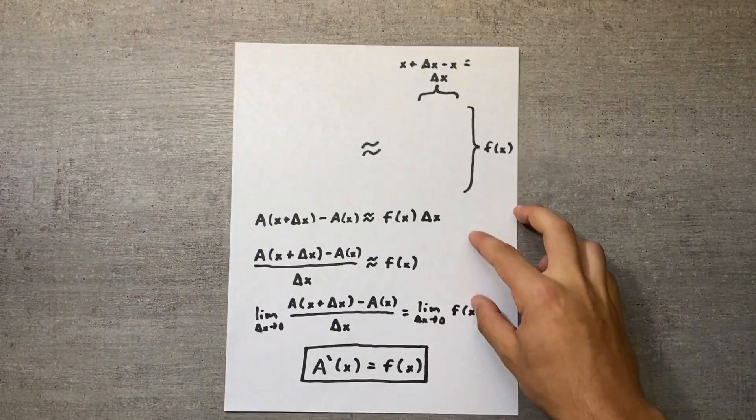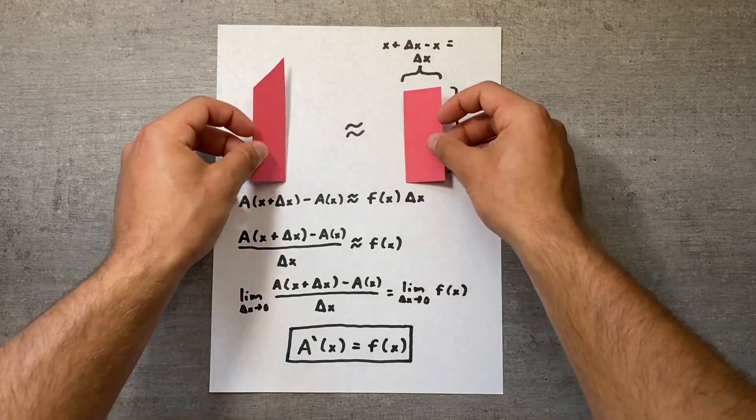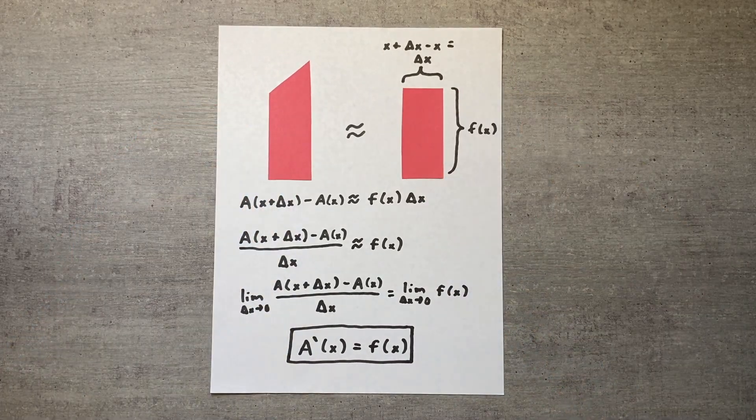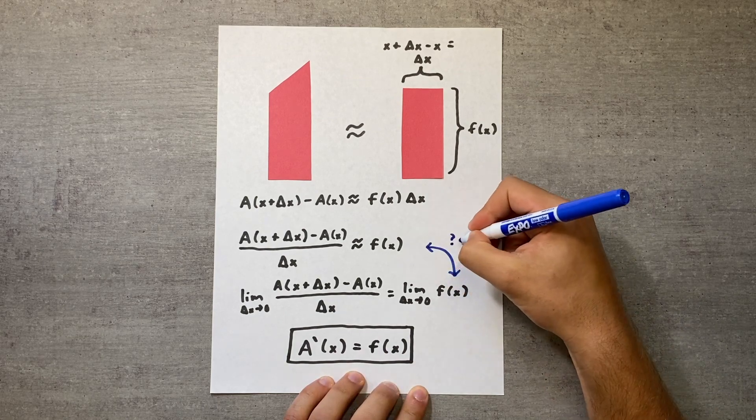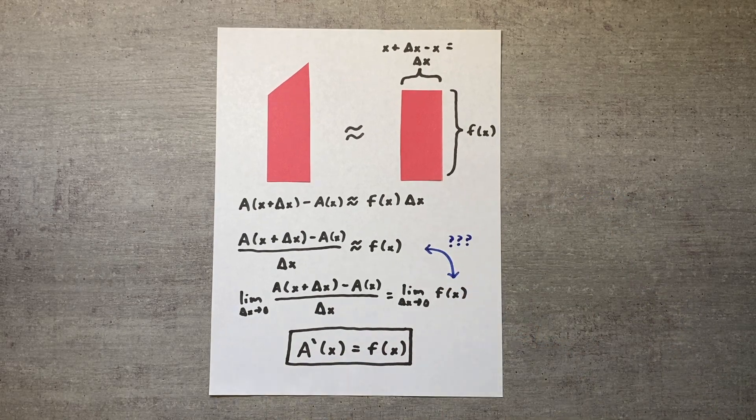However, proof 2 still contains a crucial step that is not fully justified. How do we know that the area of the rectangular approximation actually approaches the true difference in area? To answer that, we turn to proof 3.